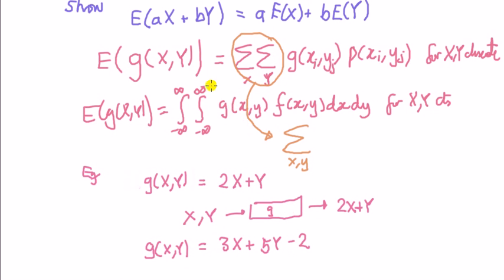Note that the proof that we're doing today, for this case, is like where a is equal to 2 and b is equal to 1. So, if we take the expectation of this thing, we know it's going to be 2 times expected value of X plus expected value of Y.